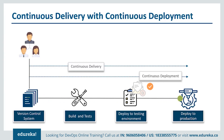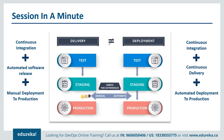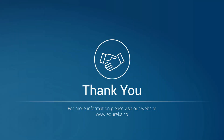Hopefully that distinguishes the two for you. Continuous delivery is a capability you must have, and continuous deployment is an option you might choose based on the kind of product you have. In short, continuous delivery is continuous integration plus automated release plus manual deployment to production. Continuous deployment is continuous integration plus continuous delivery plus automated deployment to production. That's all for today's session — thank you and have a great day.